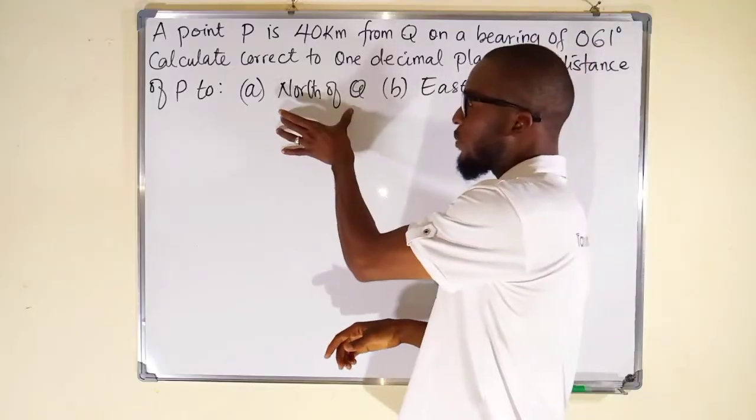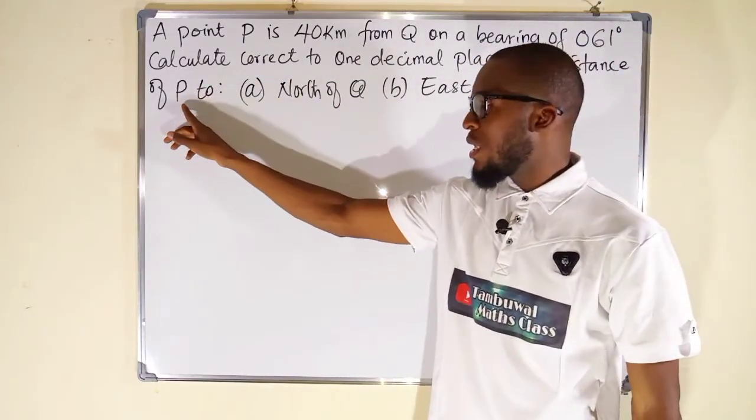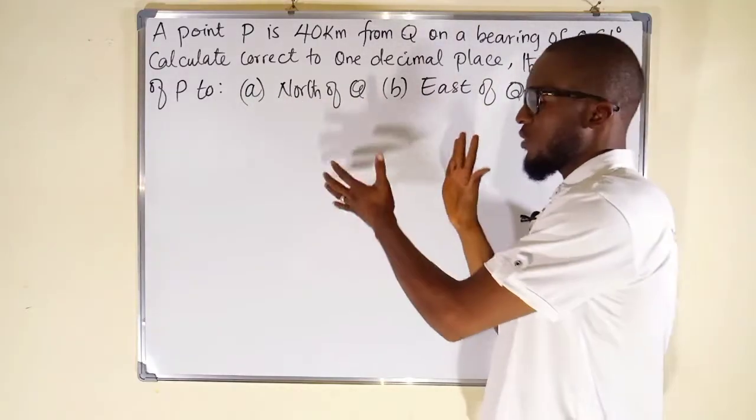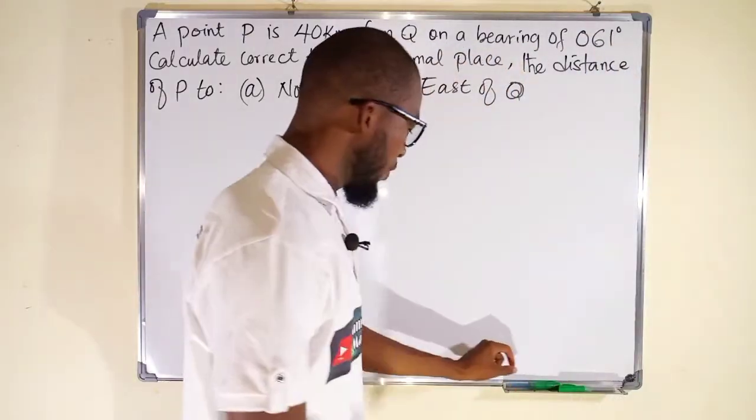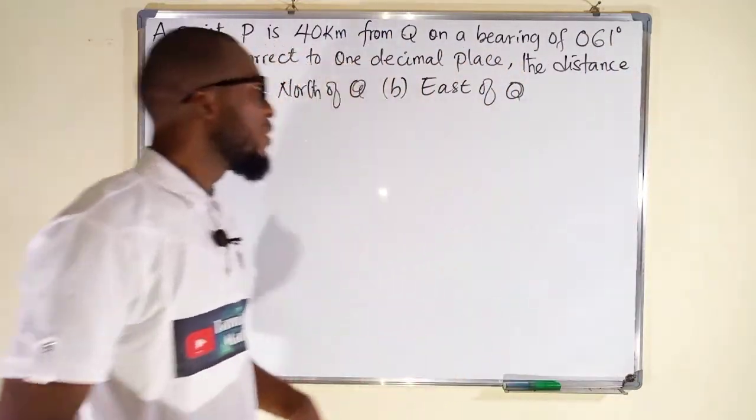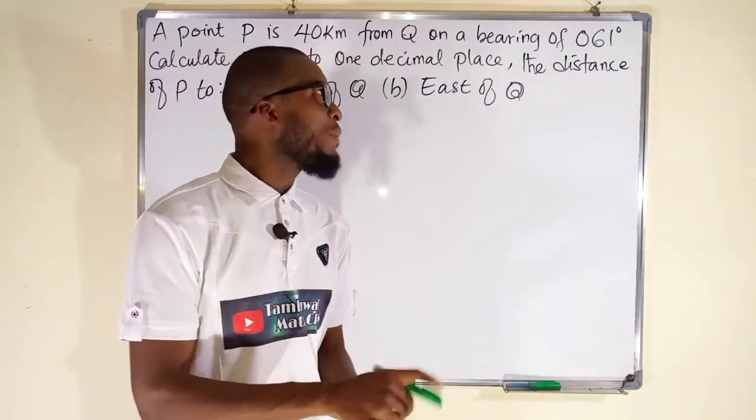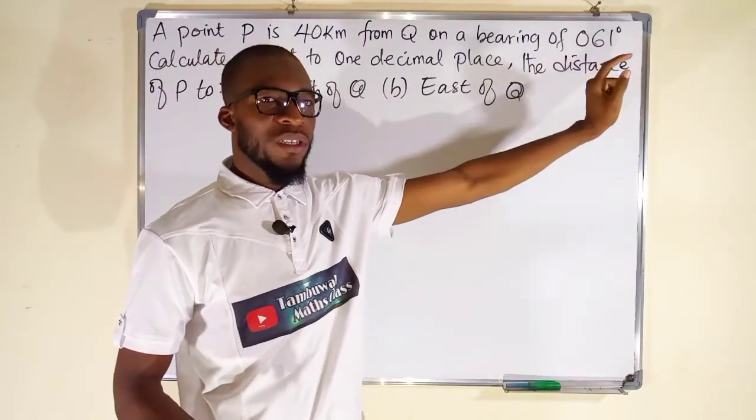This means that the first question, A here, we're going to calculate the distance of P to north of Q. So now let us interpret this question to our normal sketch. Remember I told you, the very first thing you need to construct is the first bearing from the question.